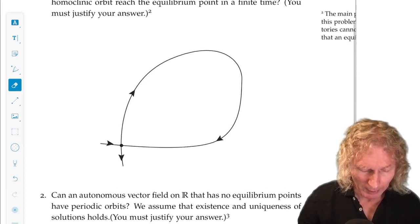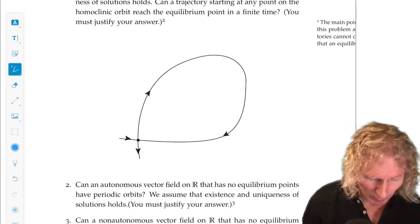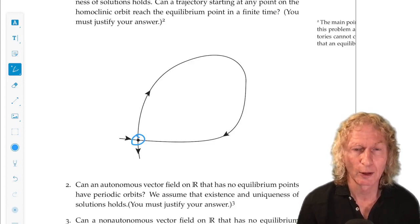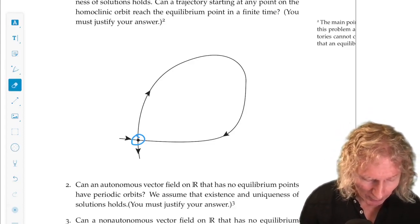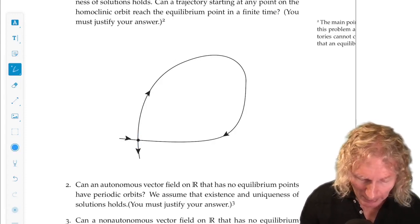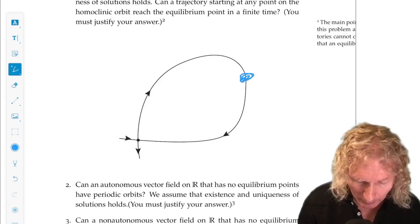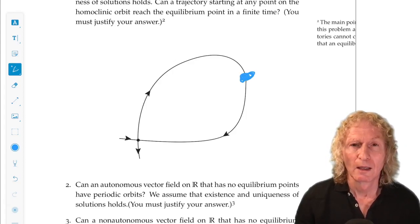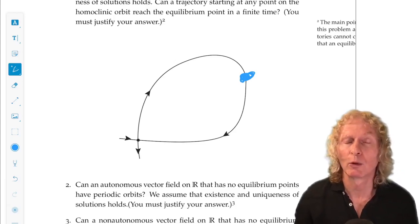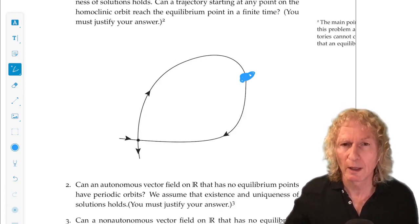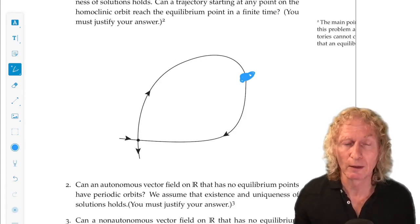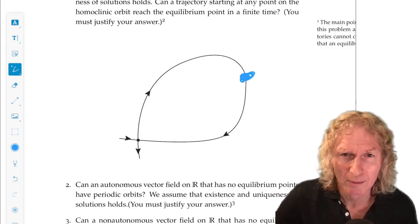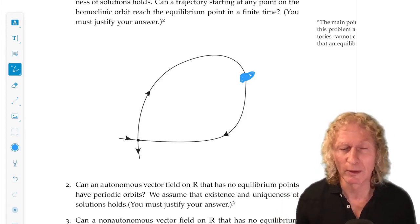So problem set 2. The first problem, I consider an equilibrium point that has a homoclinic connection, a homoclinic orbit. So the question is, if you take any point on the homoclinic orbit that's not the equilibrium point, can that point reach the equilibrium point? Reach means evolve in time along the homoclinic trajectory. Can it reach the equilibrium point in a finite time? Now there's a lot you can get out of this problem. The answer is no.